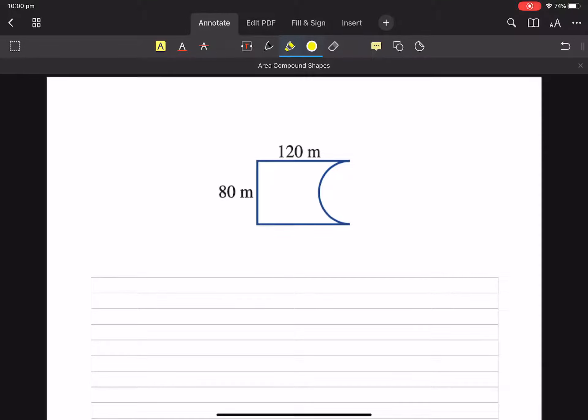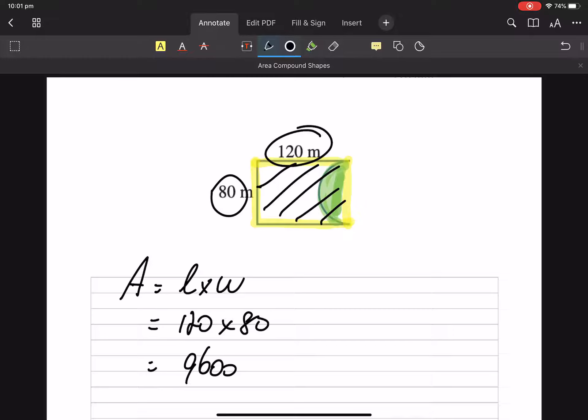I see a rectangle. But cut out of that rectangle is a semicircle. So I'm thinking to myself, let's find the area of that rectangle, which is length times width. But that's that whole rectangle. So we want to take away this section here.